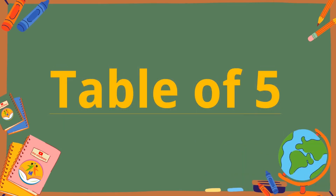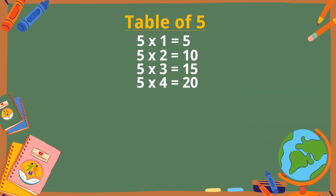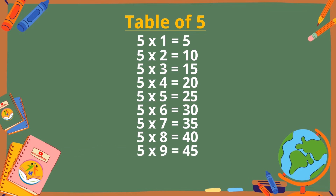Table of 5. 5×1 is 5, 5×2 is 10, 5×3 is 15, 5×4 is 20, 5×5 is 25, 5×6 is 30, 5×7 is 35, 5×8 is 40, 5×9 is 45, 5×10 is 50.